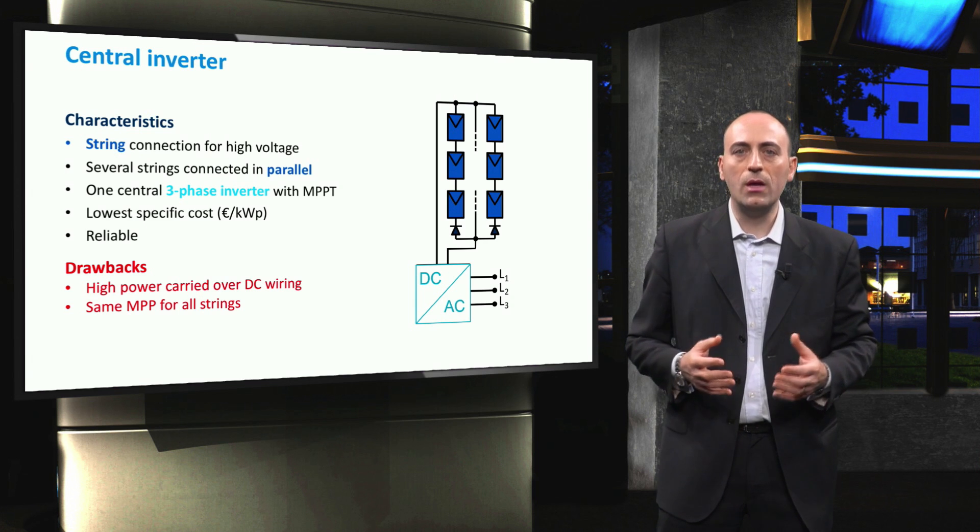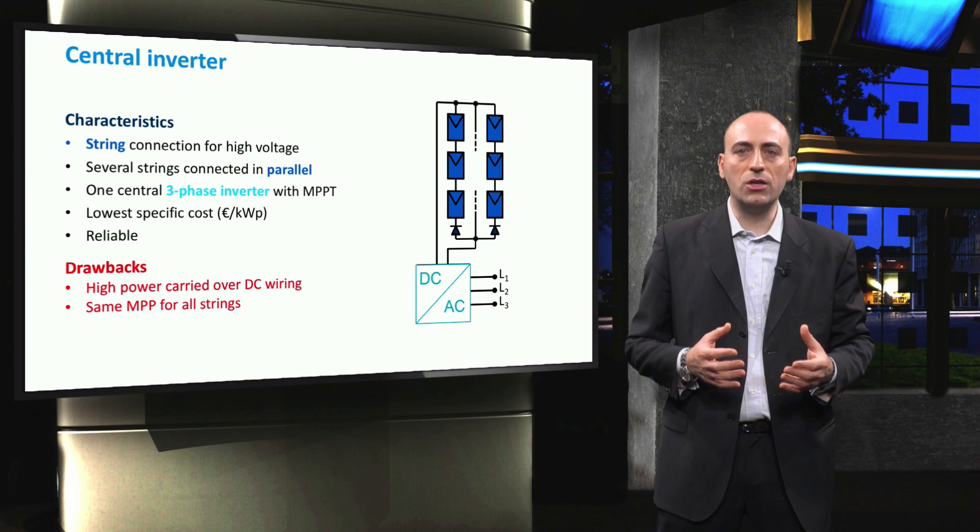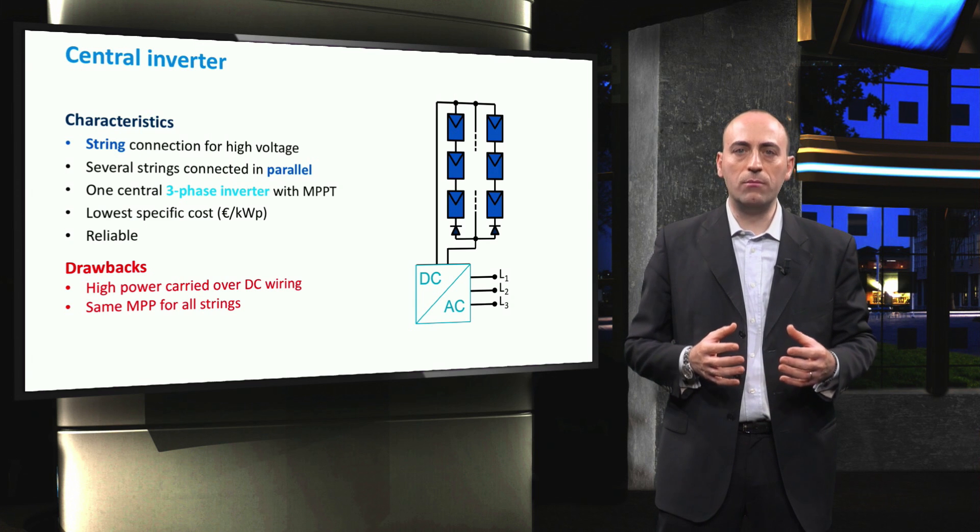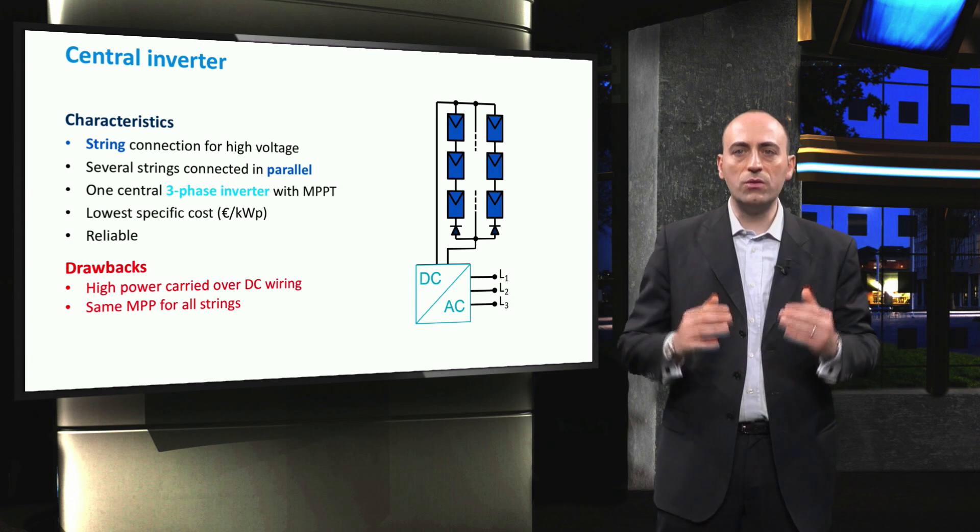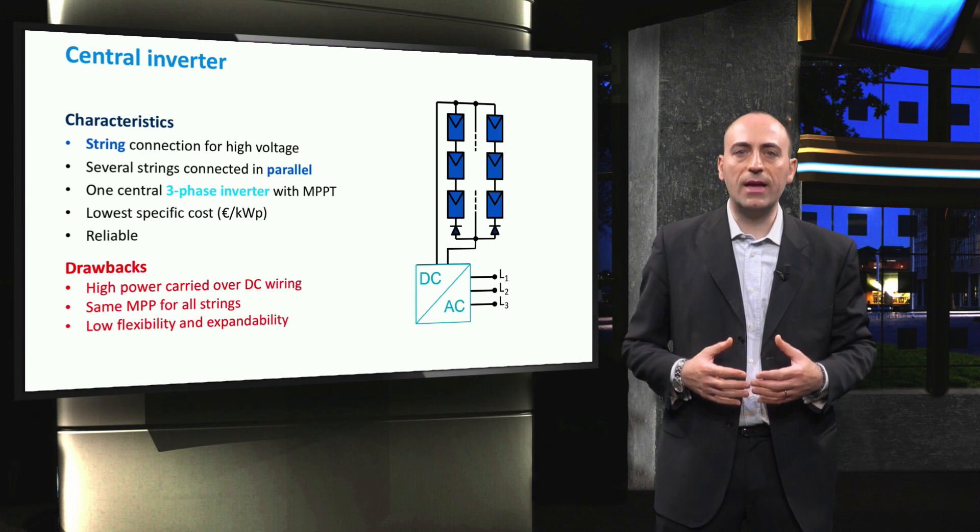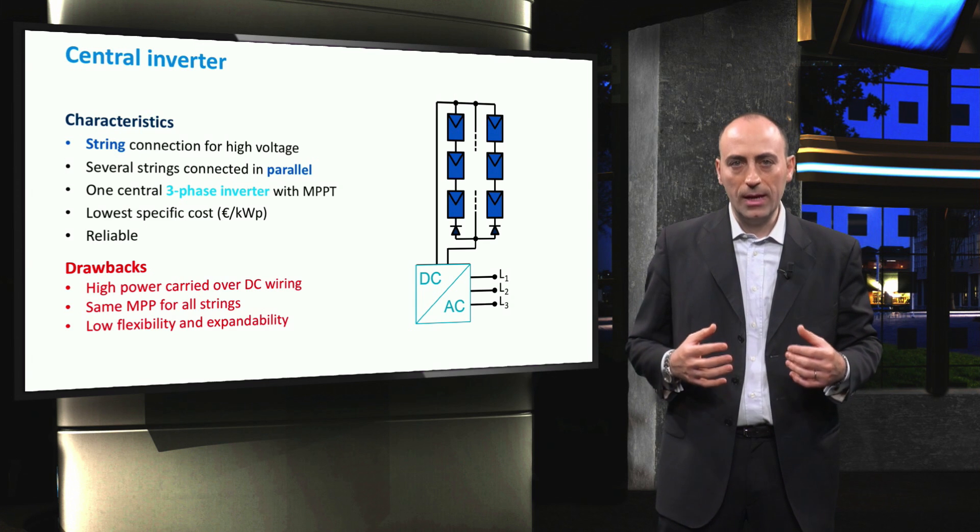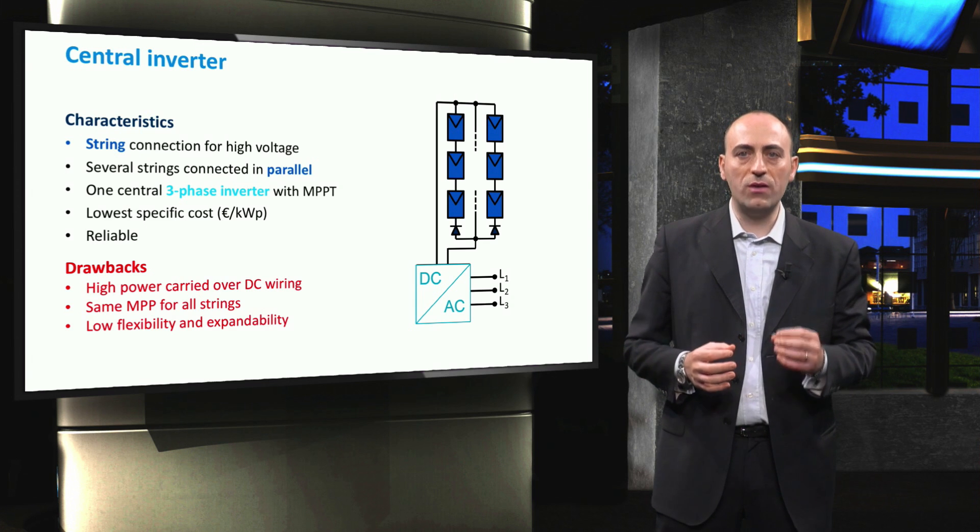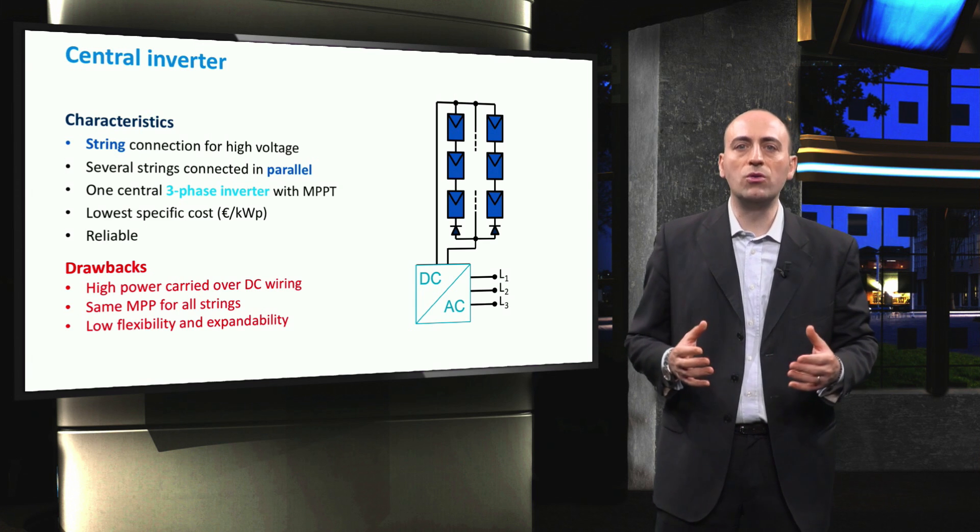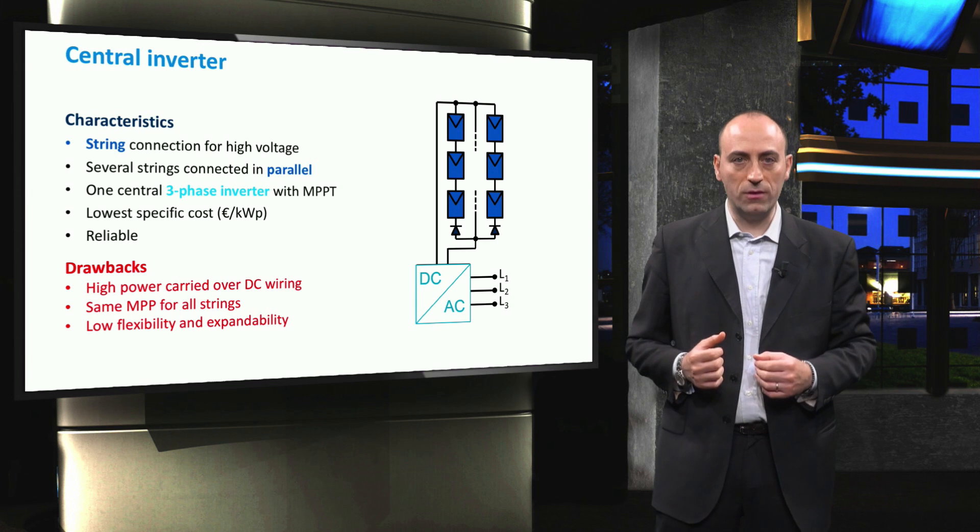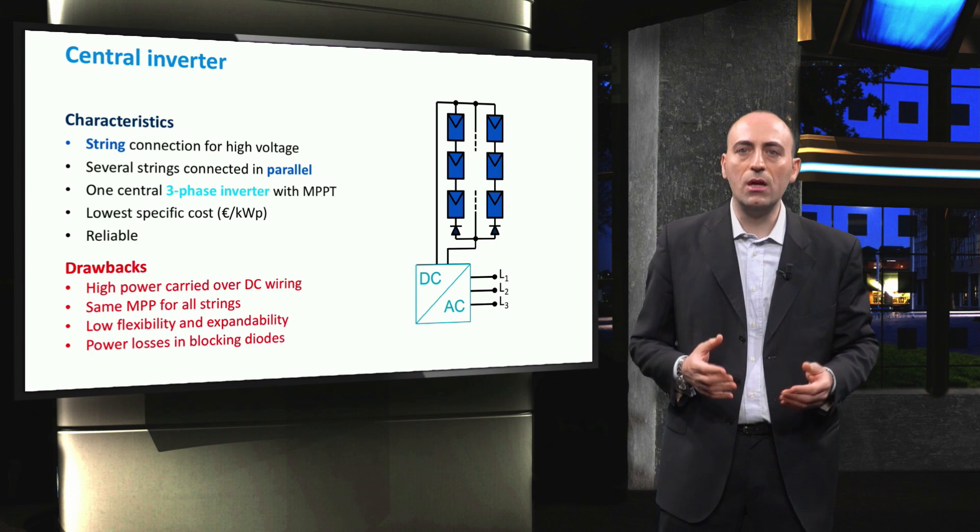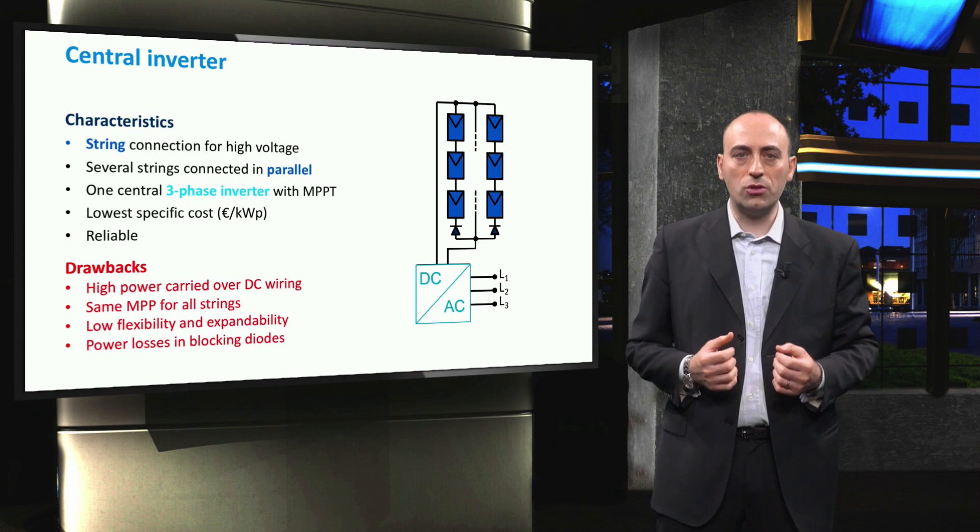Imagine, for example, a cloud casting its shadow on part of the installation for a couple of seconds. The result is a high imbalance in the power generated by the modules that causes mismatch losses and reduces the overall system output. A third drawback is the low flexibility and expandability of the system. As the central inverter is designed to work with a specific installed peak power, its maximum input power is limited, and so is the number of modules that the array can accommodate. Lastly, since we have to use blocking diodes in each string to prevent current circulation, then we have to consider also their additional power losses.